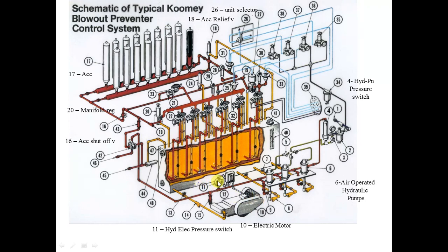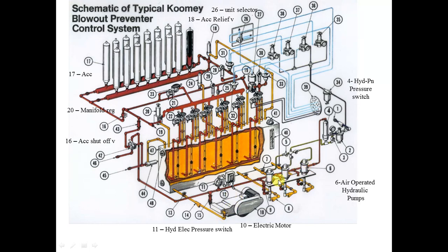Number eleven is the automatic hydroelectric pressure switch. For the air pump switch (number four), it starts at 2700 psi and stops at 3000 psi. Number eleven works similarly — it starts at 2700 psi and stops at 3000 psi. Both switches protect the respective pumps from overpressure.